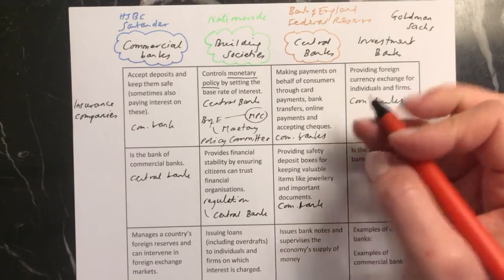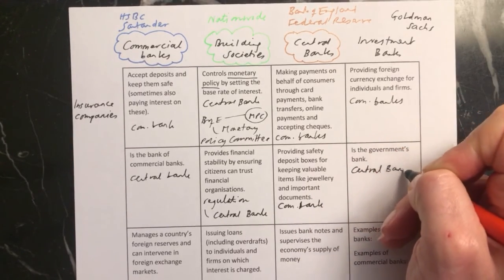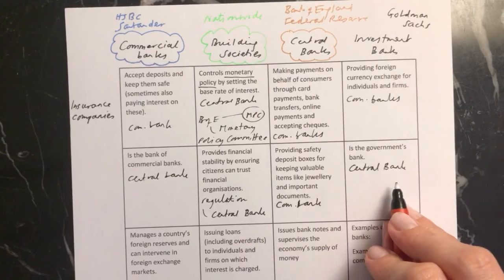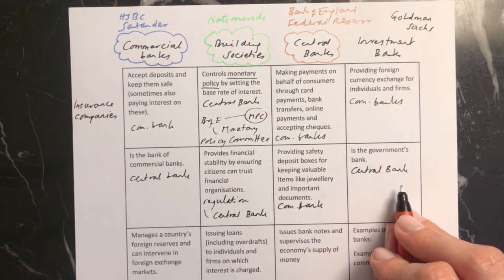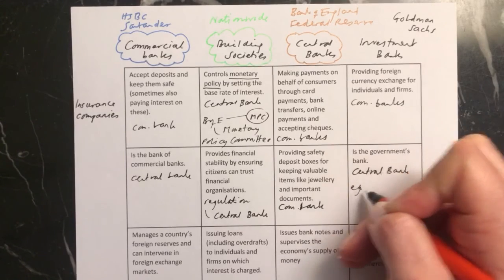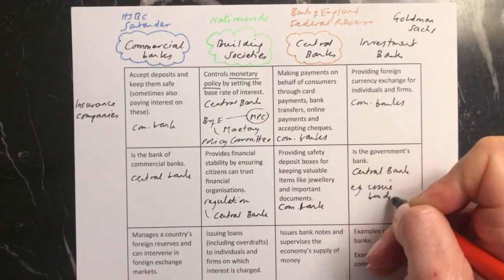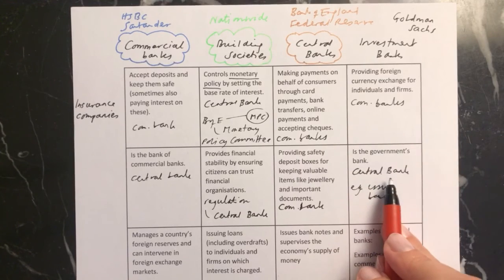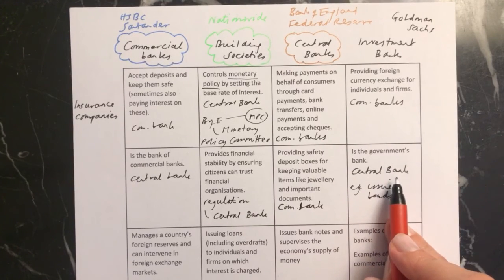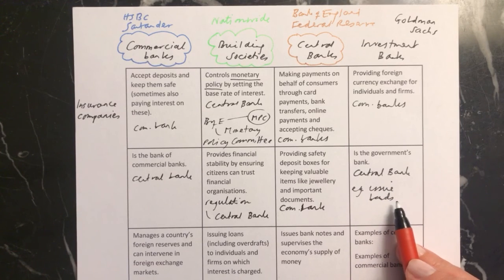The government's bank — this, again, is the central bank. The Bank of England does lots of things for the government. For example, if the UK government wanted to raise some money, they could issue some bonds, and this action would be done by the Bank of England on their behalf. Any banking matters that need to be done by the government will be carried out by the central bank. In the next video, I'll just finish off the chart.